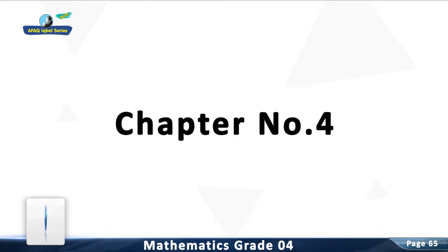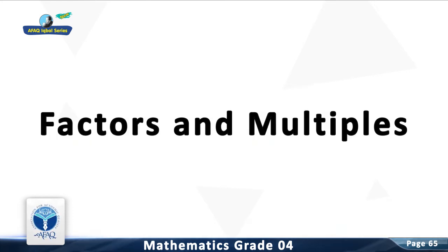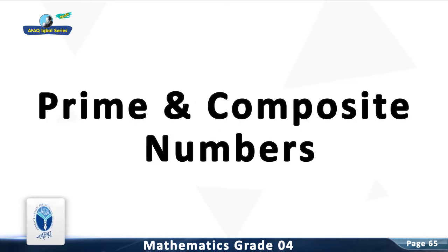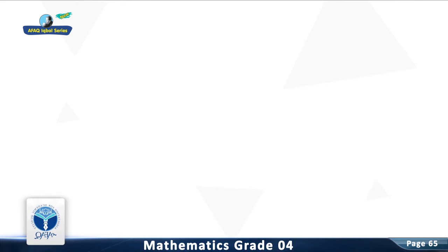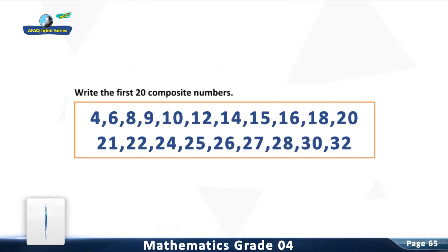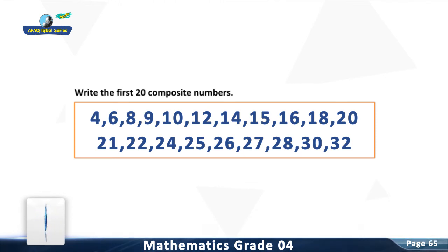Chapter 4: Factors and Multiples, Worksheet Number 19. Major Concept: Prime and Composite Numbers. Resource Pack Concept: Prime and Composite Numbers. Question 1: Write the first 20 composite numbers. You are right. The first 20 composite numbers are: 4, 6, 8, 9, 10, 12, 14, 15, 16, 18, 20, 21.